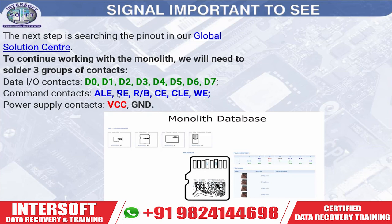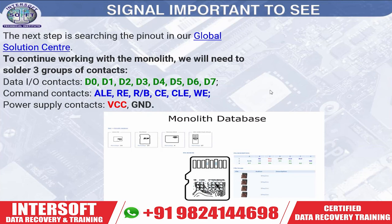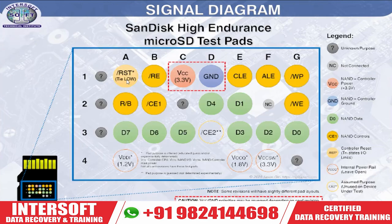The important signal names are: Command (CL), ALE (Address Latch Enable), RE (Read Enable), RB (Ready/Busy), CLE (Command Latch Enable). These are the signal names which are important. When you go to the PC3000 site you will get these types of pin-outs — which pin number is VCC, which is ground, like that.